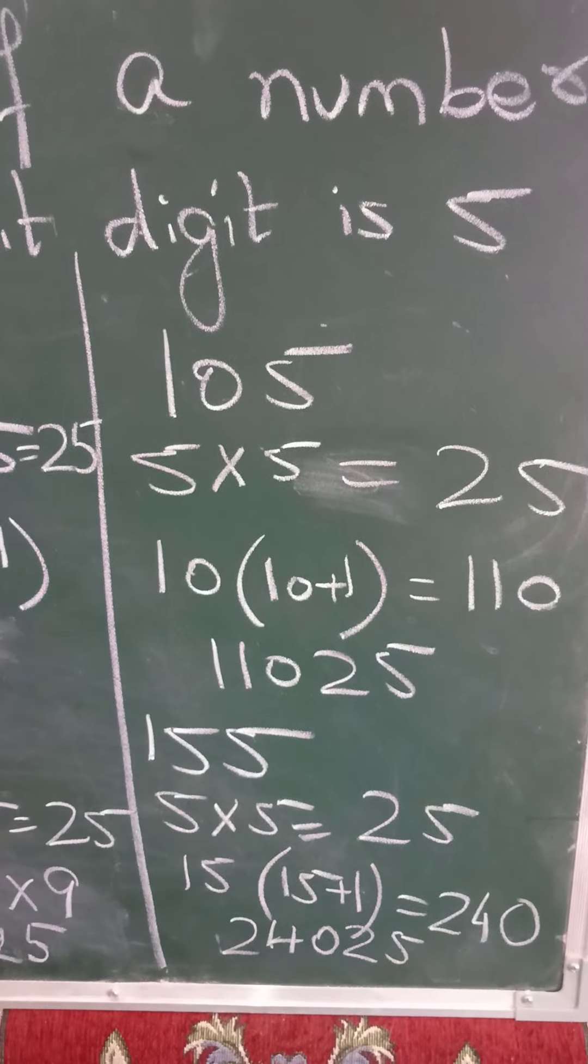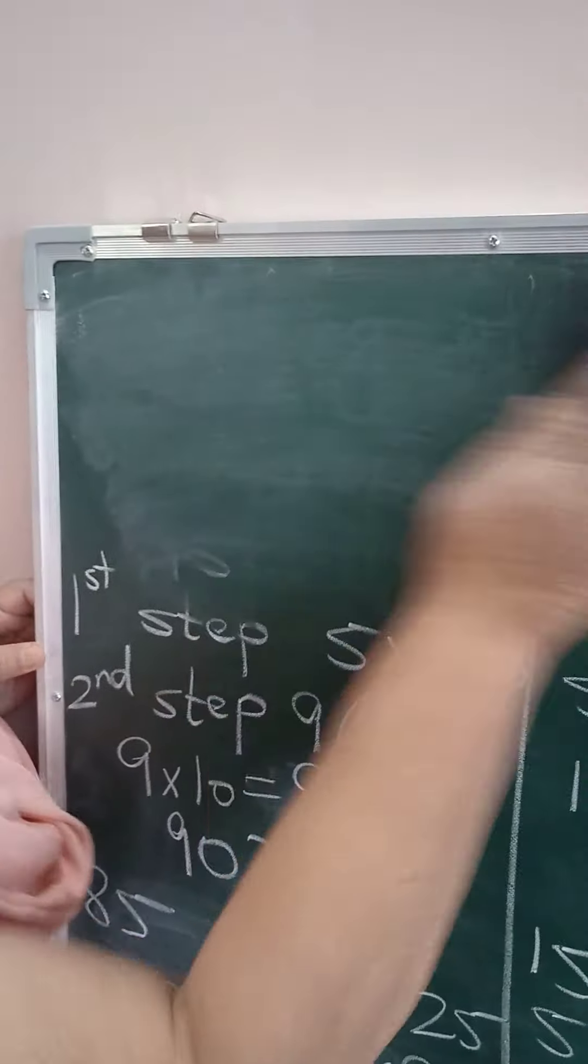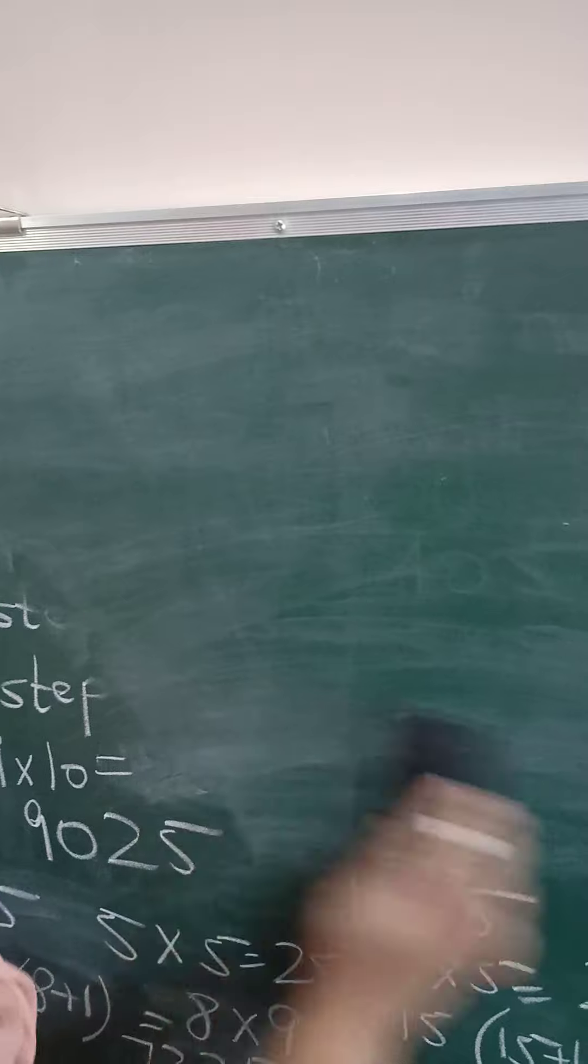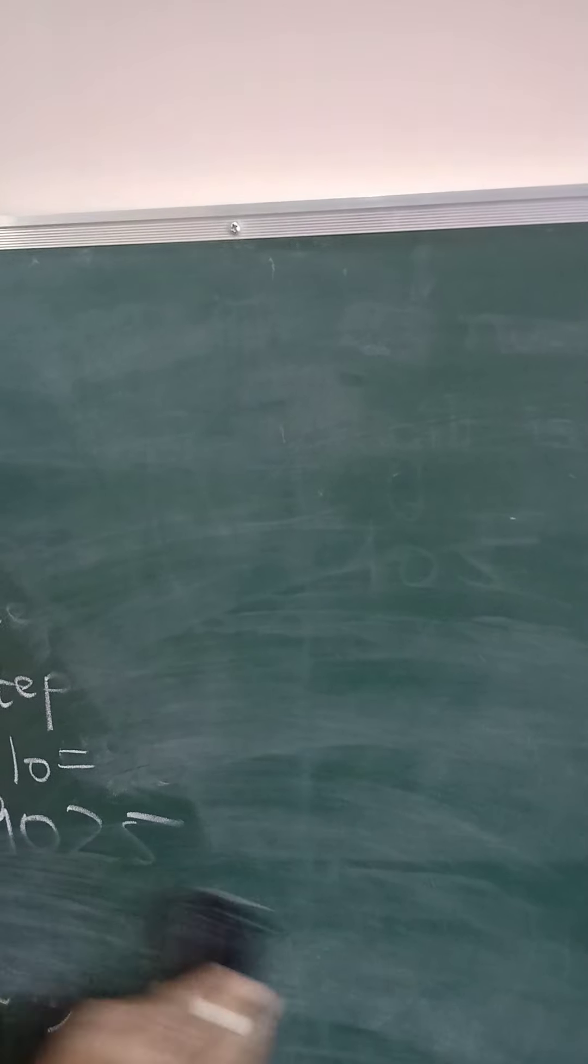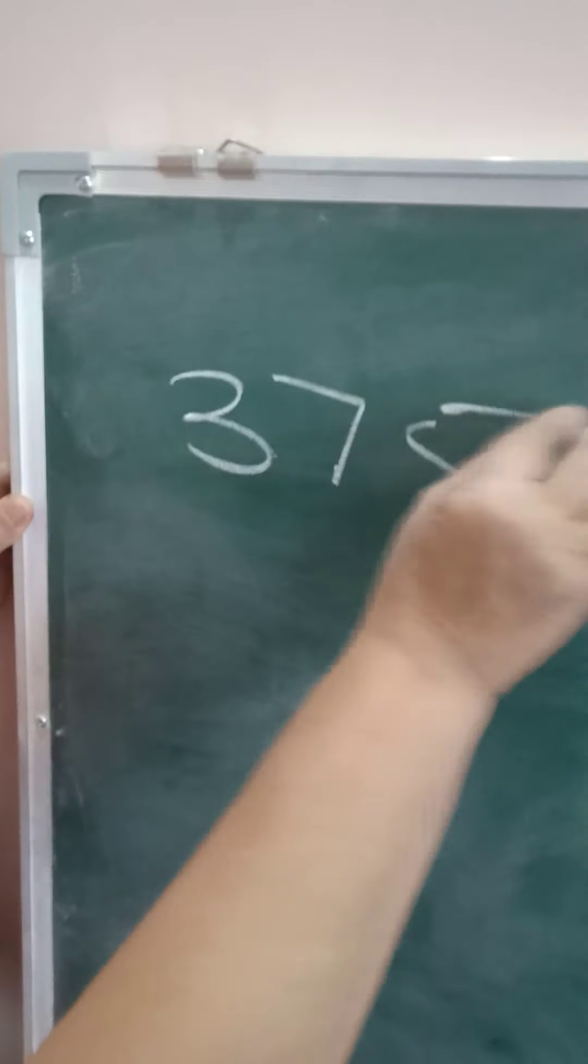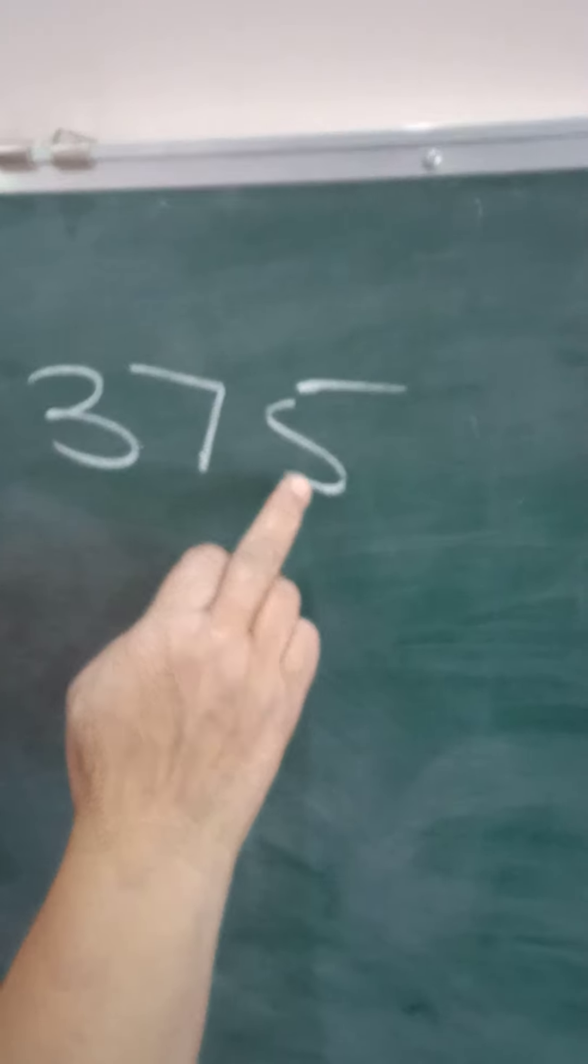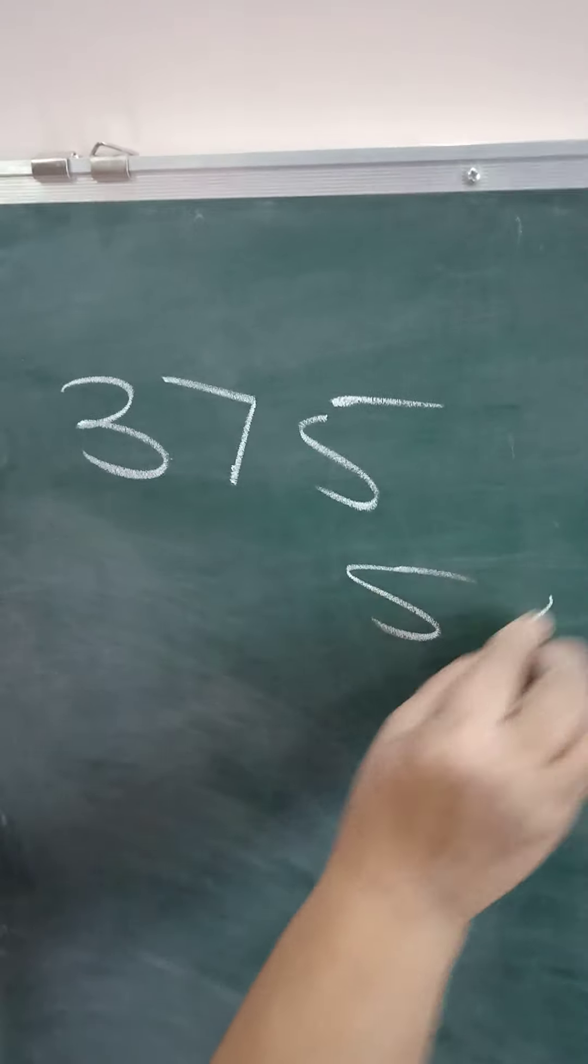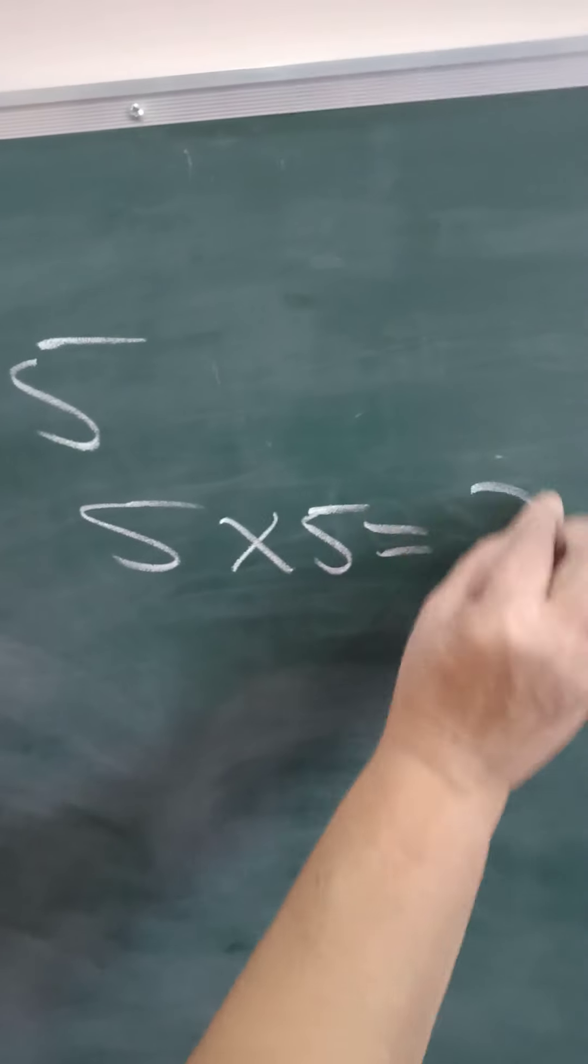Children, we will see 3 or 4 more examples. And then you will be perfect in this. You will be able to do it orally. I am sure you will understand and you will try to do it orally. See, the next number I am taking, 375. Here the last digit is 5. So 5 into 5, you know it is 25.